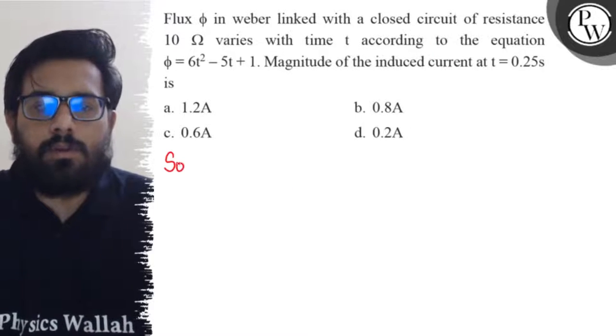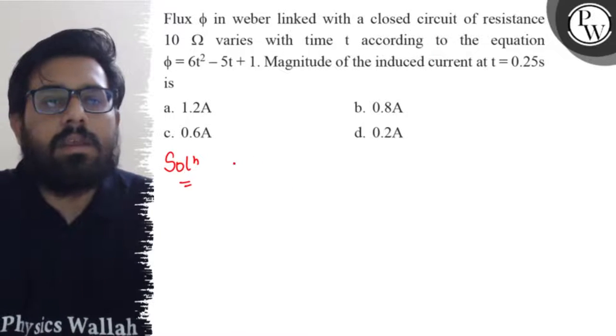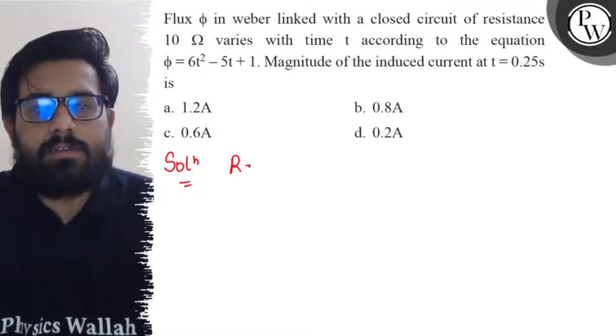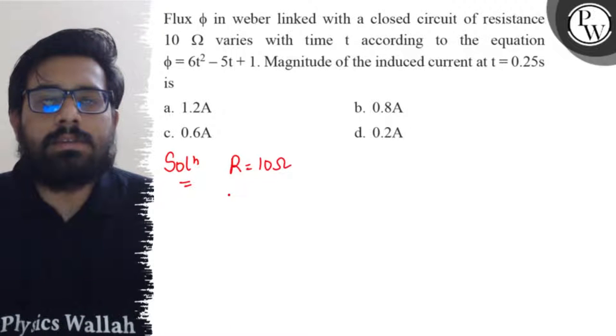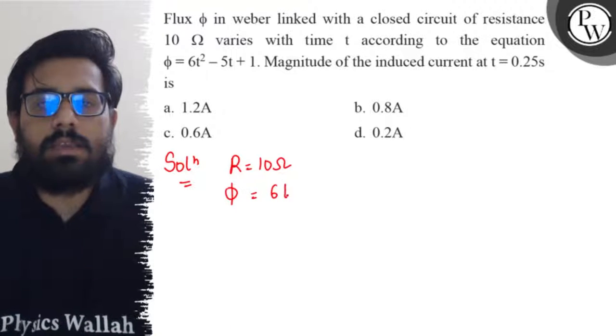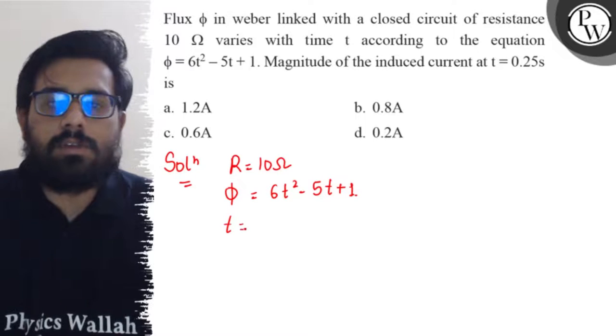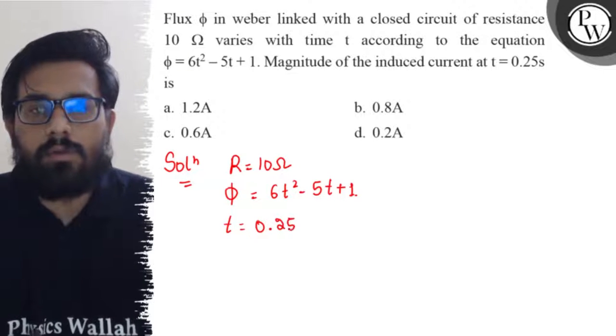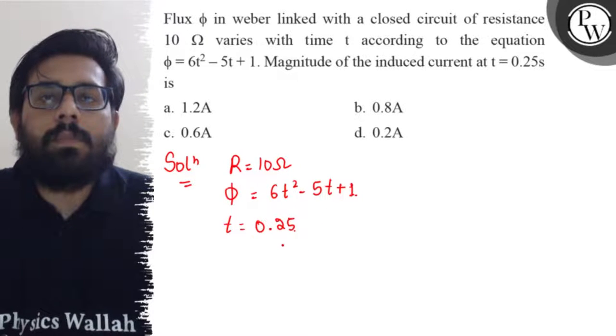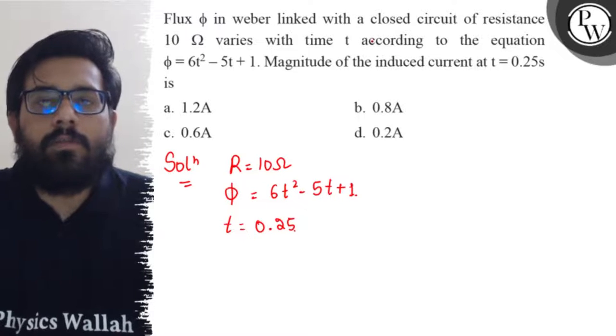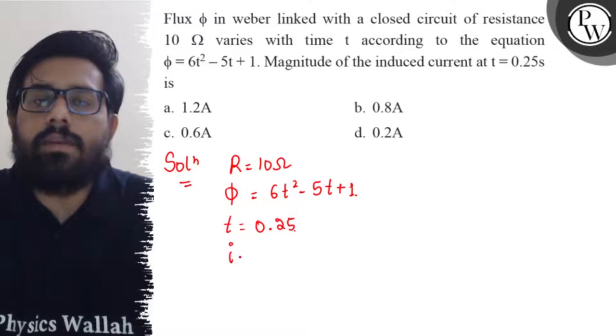So in this particular question, what are the given data we have? The resistance is given as 10 ohm, flux is given as φ = 6t² - 5t + 1, and the time is also given as 0.25 and we have to calculate the induced current.